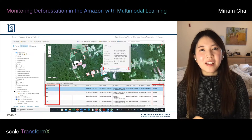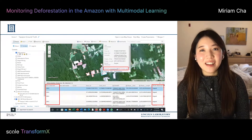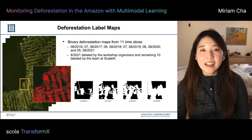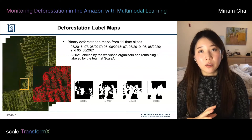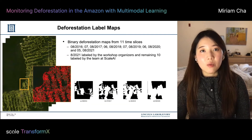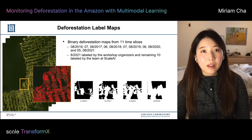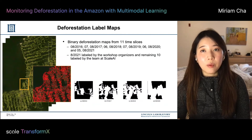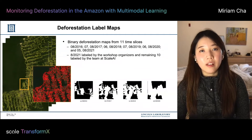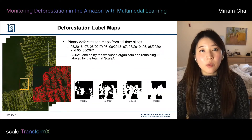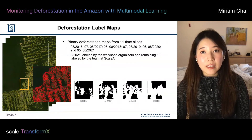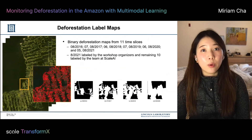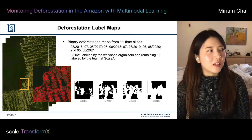But later we realized this was too time-consuming, and we contacted Scale AI to get some help. In the end, a single time slice was labeled by the multi-Earth organizers, and the remaining ten time slices were labeled by the team at Scale AI. Just a single time slice contained roughly 10,000 polygons, so it was a great deal of help to get that manual labeling support.